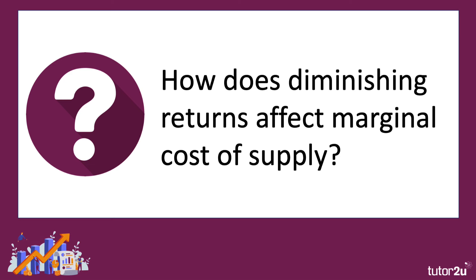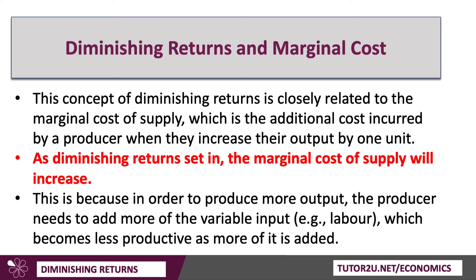Now, how does diminishing returns affect marginal cost of supply? Well, the concept of diminishing returns is really closely related to the marginal cost of supply, which is the change in total costs when you increase your output by one unit. The basic rule is as follows: as diminishing returns set in, as the marginal product of labour falls, then the marginal cost of supply will go up. This is because to produce more output, the supplier — the manufacturer, the farmer in our case — needs to add more of the variable input, which becomes less productive as more of it is added.